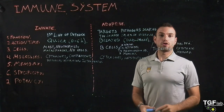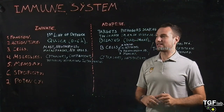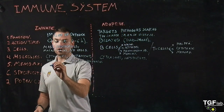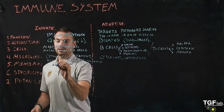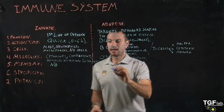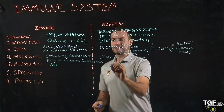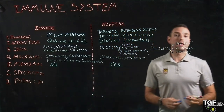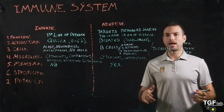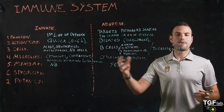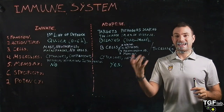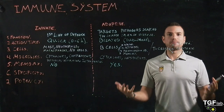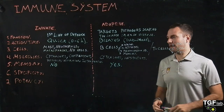We can also compare the two systems in terms of memory. The innate immune system has no memory. The adaptive immune system has memory, so it will activate very quickly when the immune system recognizes an infection it has already fought. That is why vaccines work.